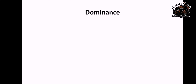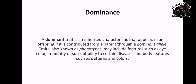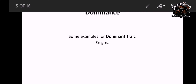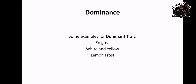So right now let's proceed to dominance. This trait is a little bit more complicated than the other traits. A dominant trait is an inherited characteristic that appears in an offspring if it is contributed from a parent through a dominant allele. Traits, also known as phenotypes, may include features such as eye color, immunity or susceptibility to certain diseases, and body features such as patterns, colors, or pigmentation. Some examples of dominant traits in leopard geckos are enigma, white and yellow, and lemon frost.